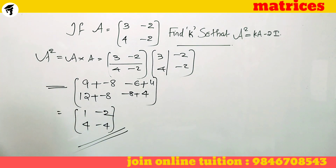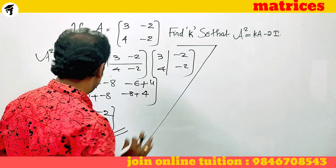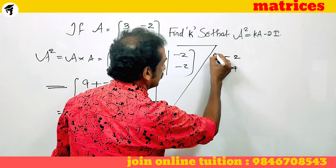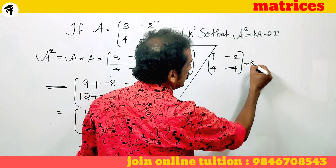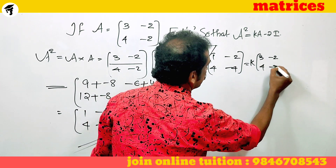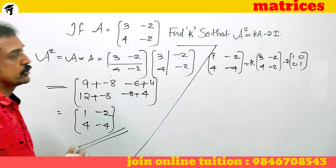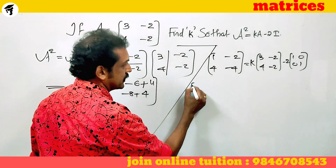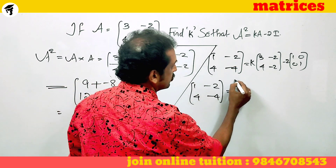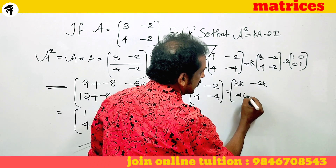So A squared equals [[1, -2], [4, -4]]. Now let's set up the equation: A squared equals kA minus 2I. That is [[1, -2], [4, -4]] equals k into [[3, -2], [4, -2]] minus 2 into [[1, 0], [0, 1]]. Simplifying the right side: [[3k, -2k], [4k, -2k]] minus [[2, 0], [0, 2]].